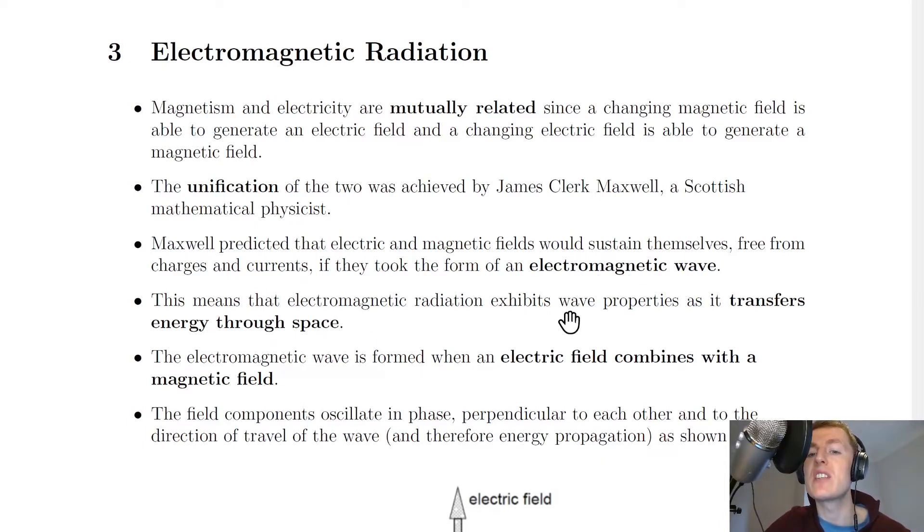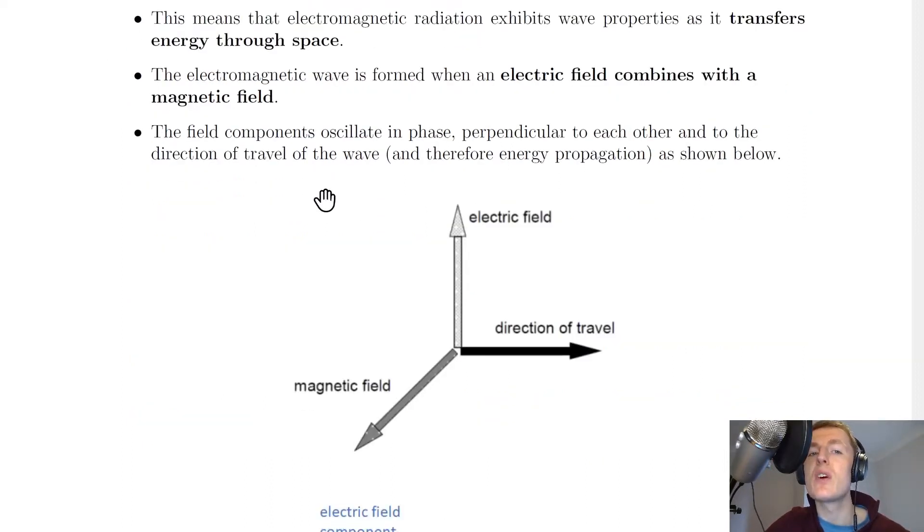This means that electromagnetic radiation exhibits wave properties as it transfers energy through space. The electromagnetic wave is formed when an electric field combines with a magnetic field.